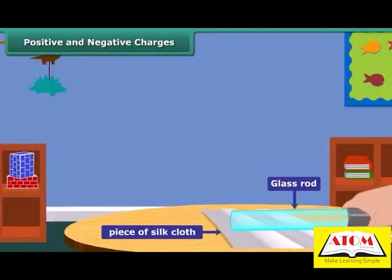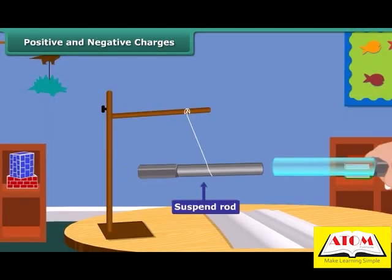Now take a glass rod and rub it with a silk cloth. Bring this glass rod close to the charged suspended ebonite rod. What do you observe now? The suspended ebonite rod comes closer to the glass rod.